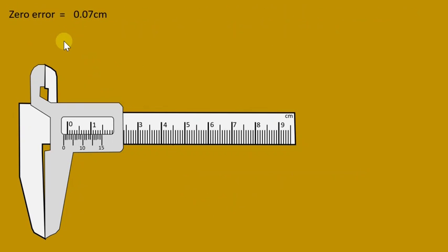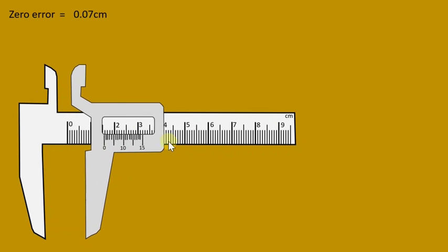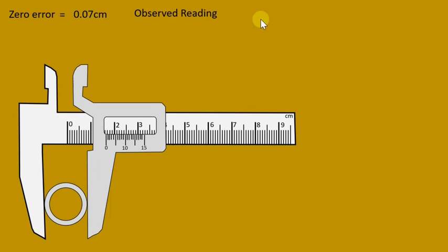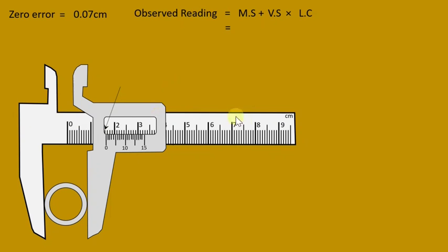Now assume this same instrument, which has a zero error of 0.07 cm, is used to measure the external diameter of a ring. The observed reading formula is: observed reading = main scale reading + (Vernier scale reading × least count).